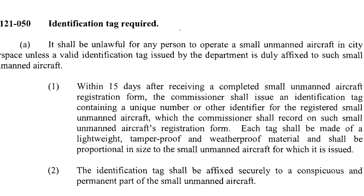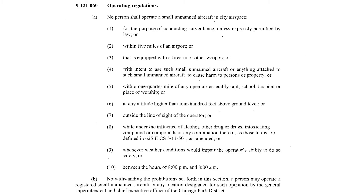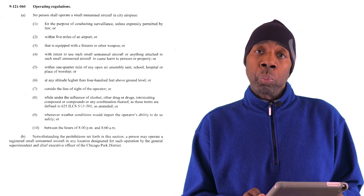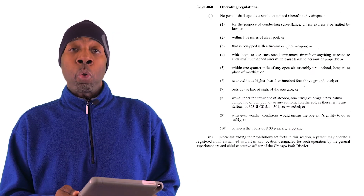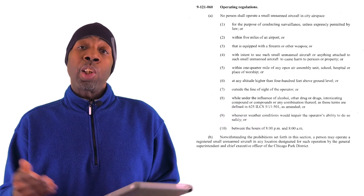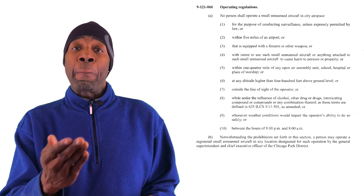No surveillance unless permitted by law. No flying within five miles of an airport. No firearms or weapons can be equipped to the UAS or drone. You cannot operate within one quarter mile of any open-air assembly unit — that includes sporting events like Soldier Field, Comiskey Park, Wrigley, and so forth — also schools, hospitals, and places of worship.